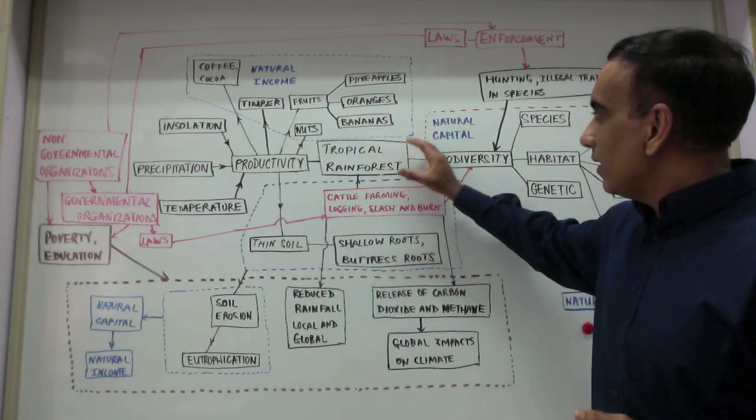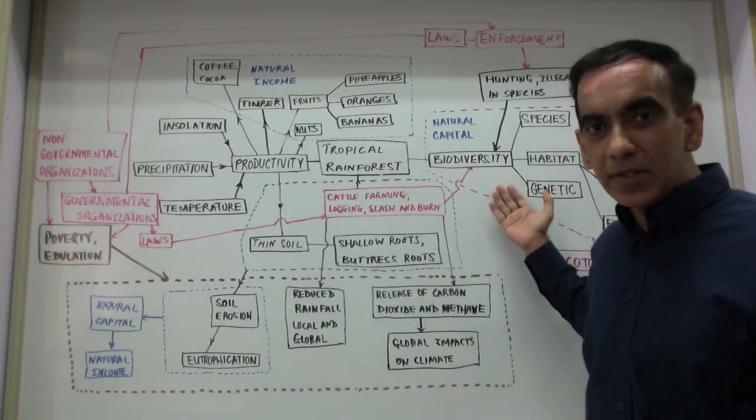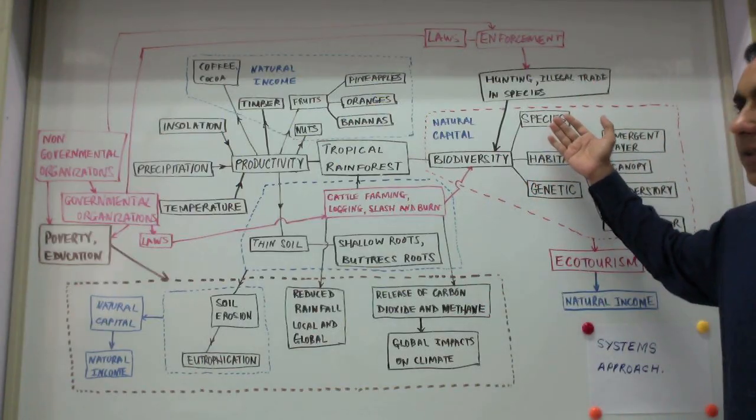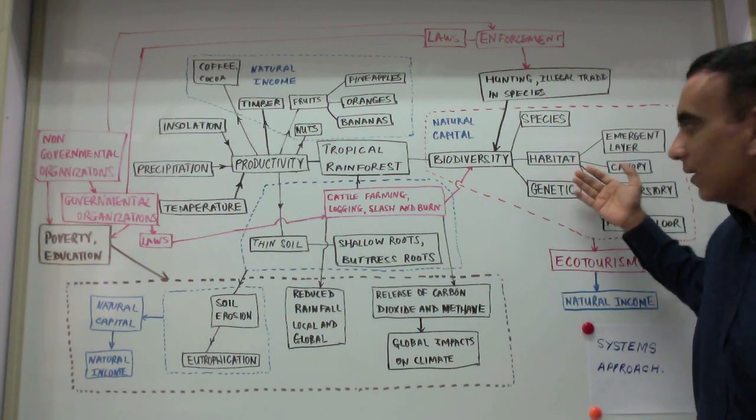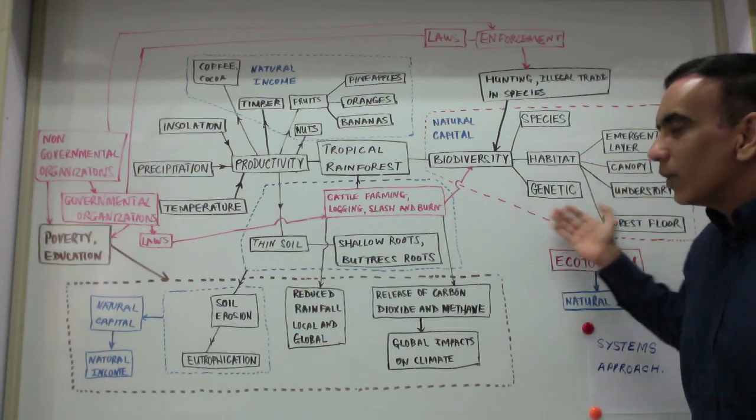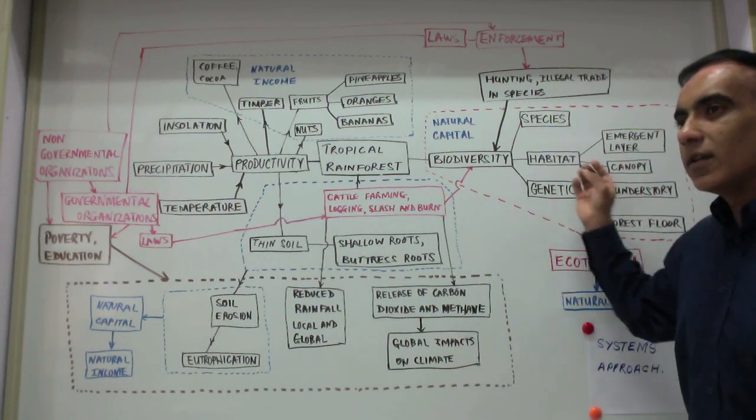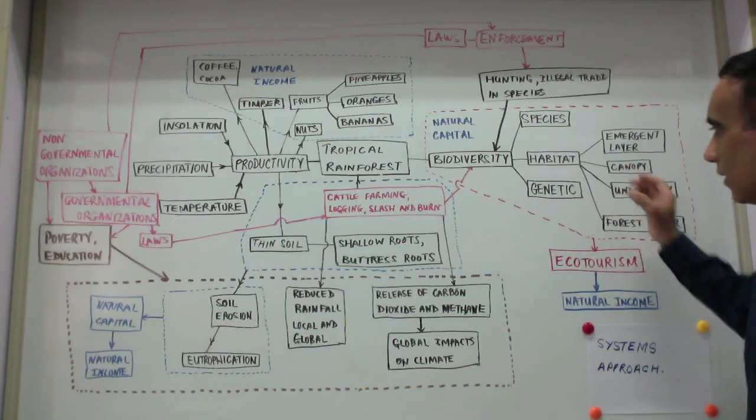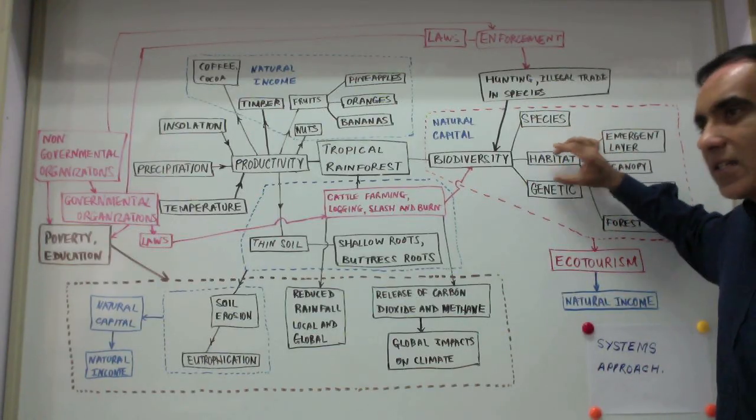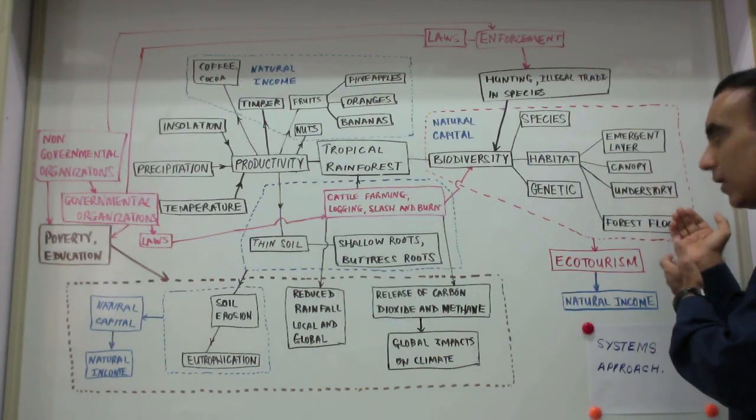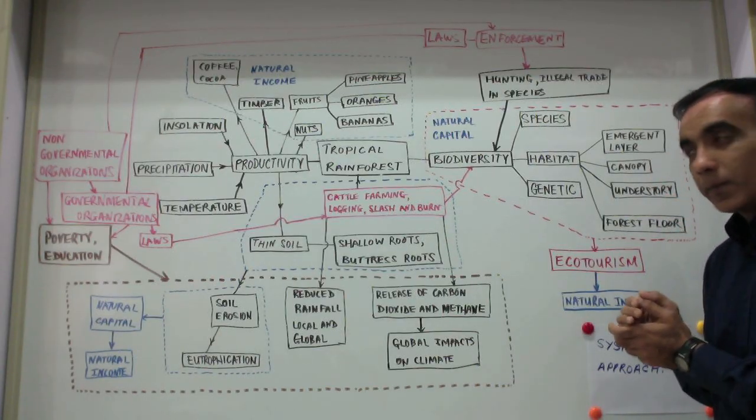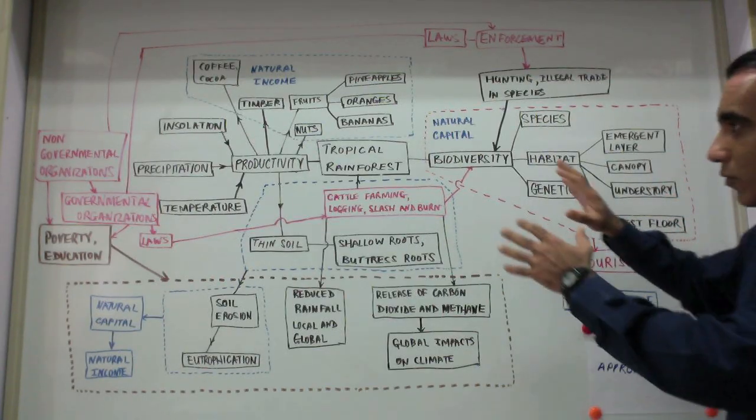A tropical rainforest is a haven of biodiversity, made up of a diversity of species, habitats, and within each species great genetic diversity. The habitat itself is made up of the emergent layer, the canopy, the understory, and the forest floor.